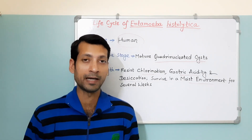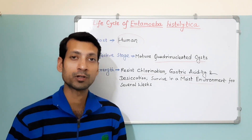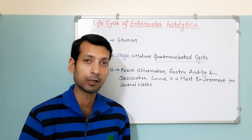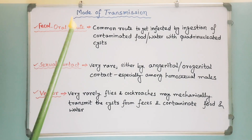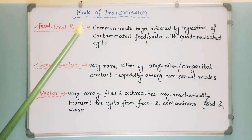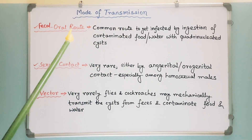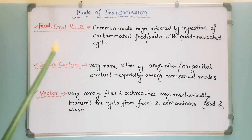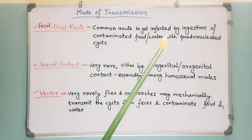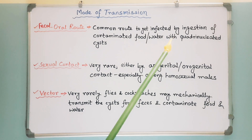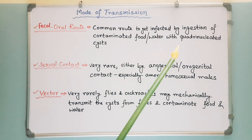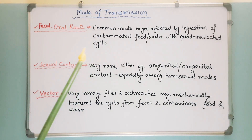Now I am going to discuss the mode of transmission of Entamoeba histolytica into humans. Humans acquire infection by three probable routes. The fecal-oral route is the most common route — we get infected by ingestion of contaminated food or water with quadrinucleated cysts.